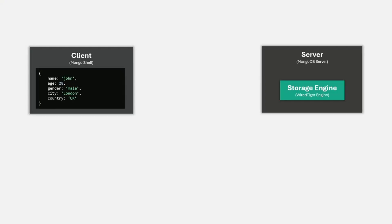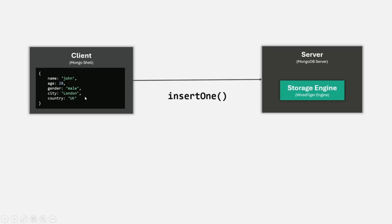I'm going to take an example of inserting a single document using the insertOne method. We have our client, which is the Mongo shell, and our MongoDB server where our database and collections are. In one of the collections of this MongoDB database, I want to insert a document using the insertOne method, and we will pass the document we want to insert.